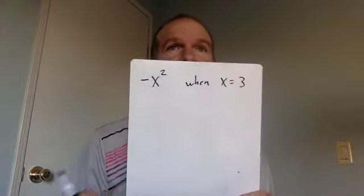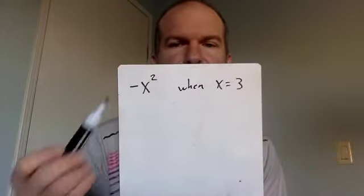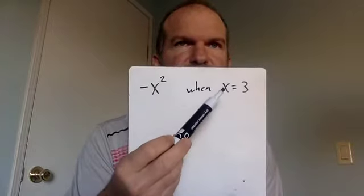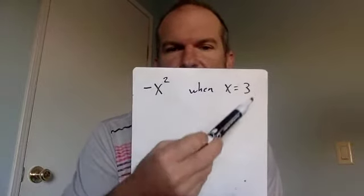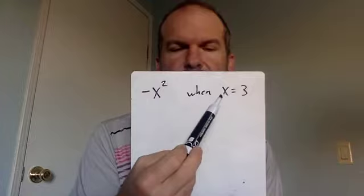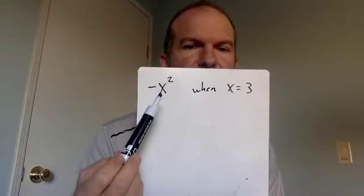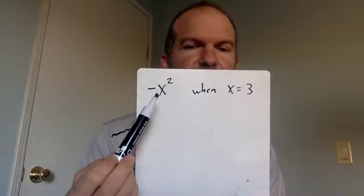Alright, in this section where you have to solve for the vertex, once you get x by doing negative b over 2a, let's say you did that and you got 3, x was 3.